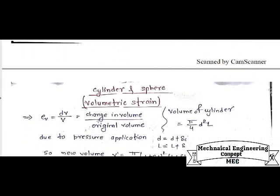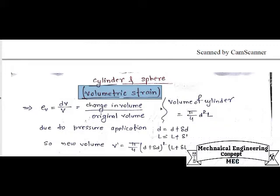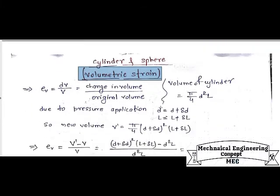Now I am going to discuss another topic, which is volumetric strain of a cylinder. Calculation of volumetric strain for a cylinder. As we know that volumetric strain is the change in volume divided by original volume. Whenever we need to calculate the strain for volume condition, the volumetric strain will be equal to change in volume by original volume.